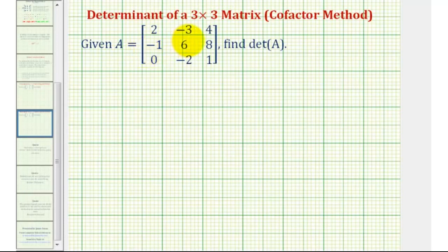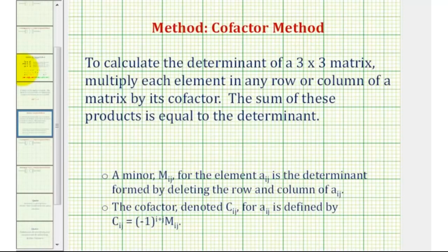Welcome back for a second example on how to find the determinant of a three by three matrix using the cofactor method. Using the cofactor method to calculate the determinant of a three by three matrix, we multiply each element in any row or column of a matrix by its cofactor. The sum of these products is equal to the determinant.